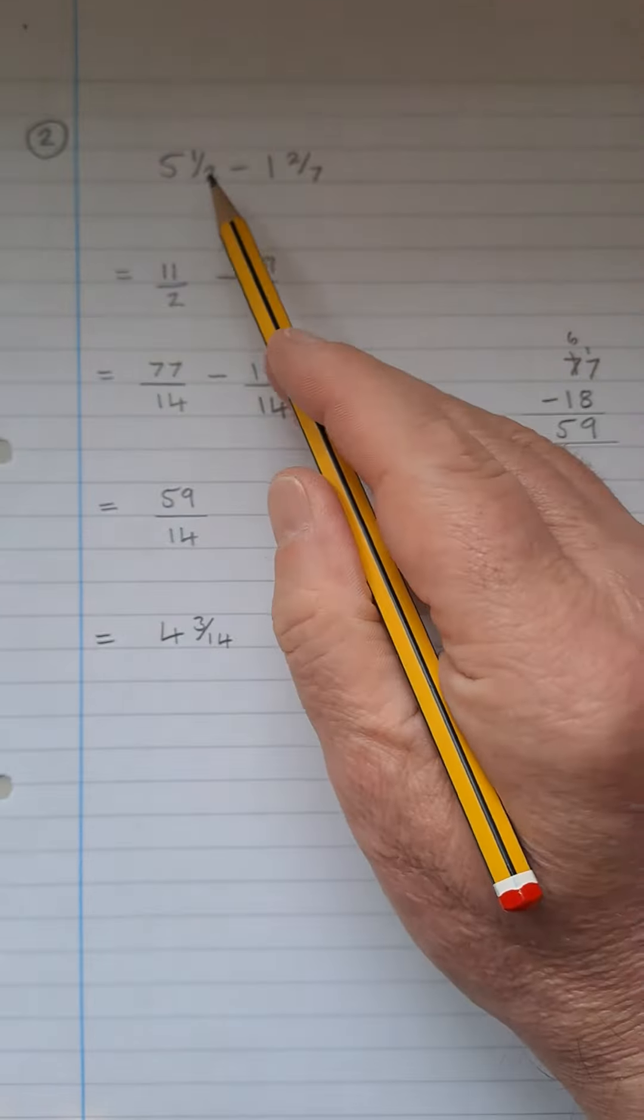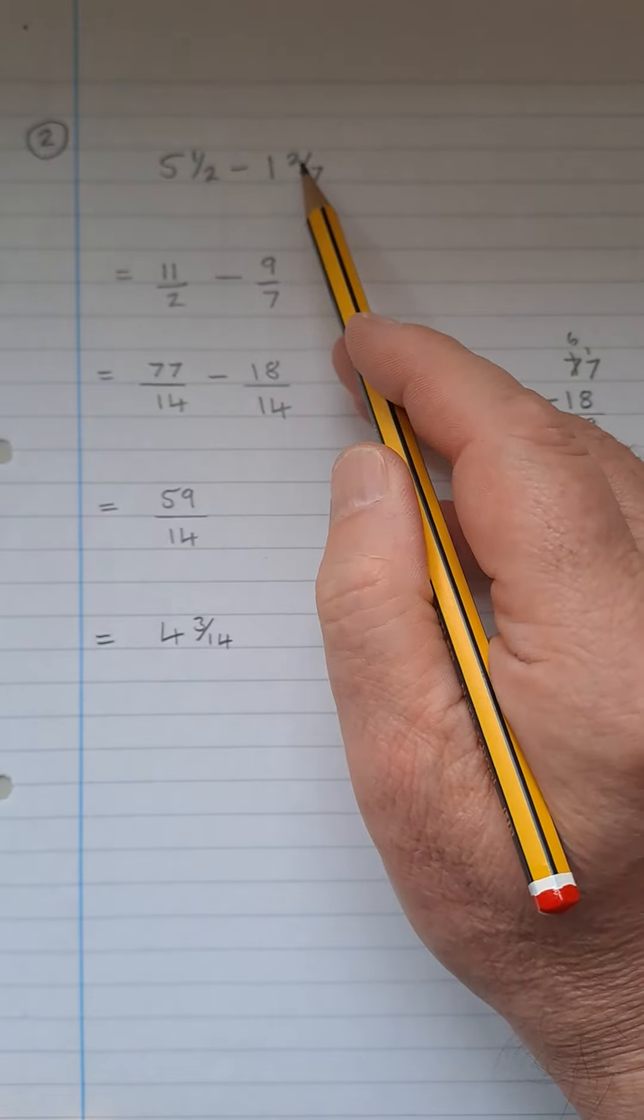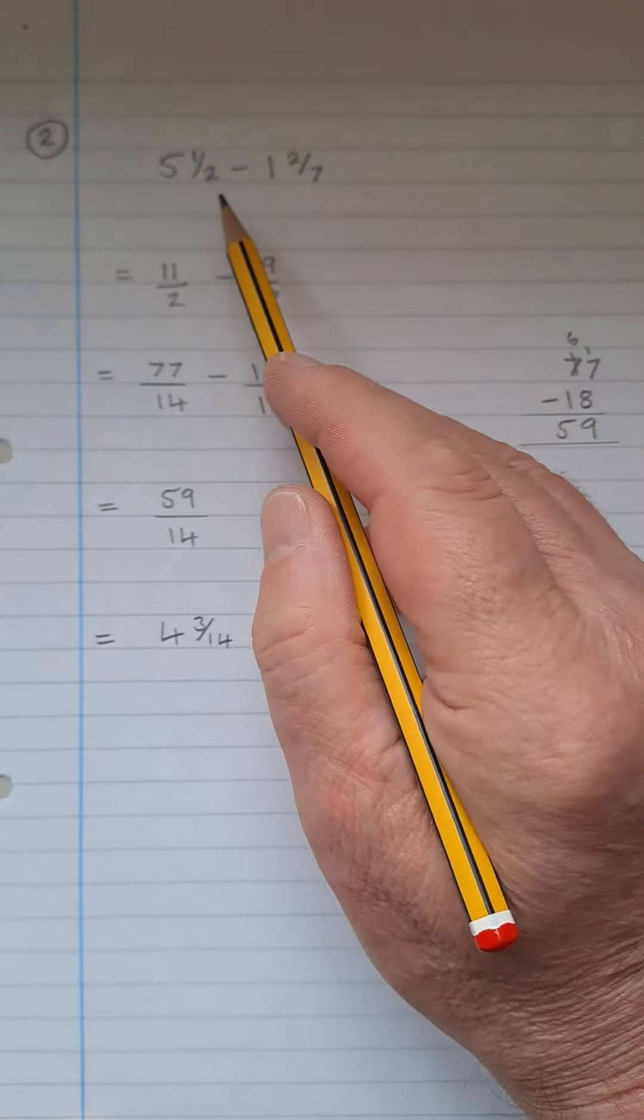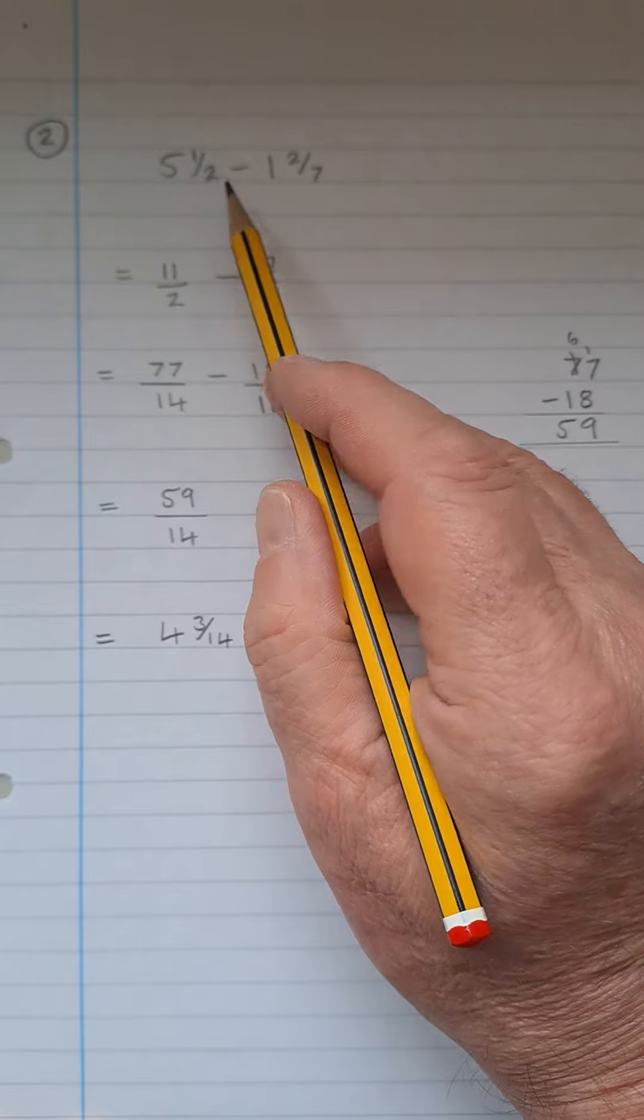You have to do 5 and 1/2 take away 1 and 2/7. So the first thing that we almost always do is turn them into improper fractions.